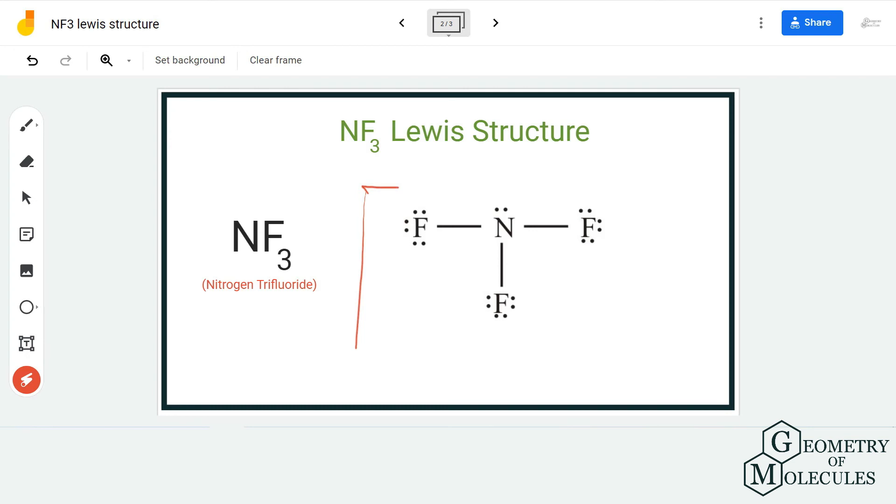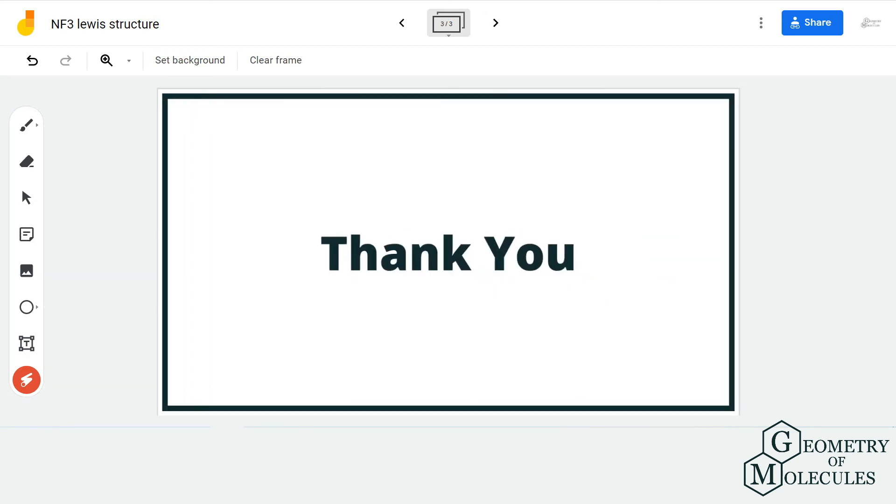This is the Lewis structure of NF3 in which there are three single bonds formed between nitrogen and fluorine atoms. I hope this video helps you understand that. For more such videos on Lewis structure, molecular geometry, and polarity of molecules, make sure to subscribe to our channel. Thanks for watching.